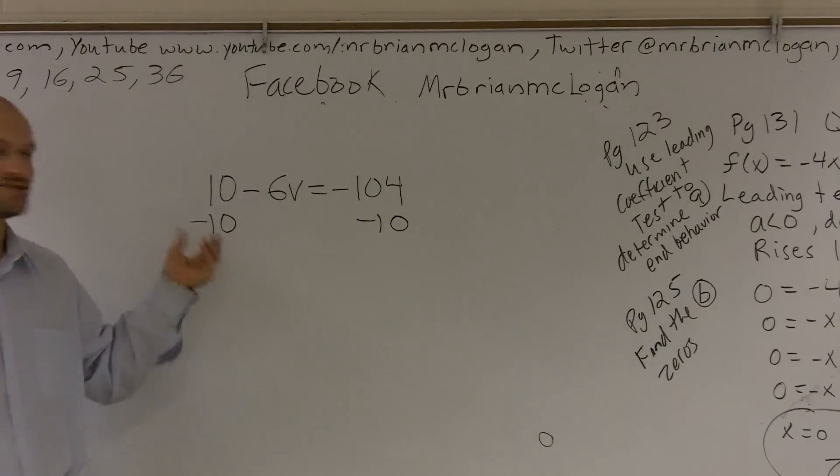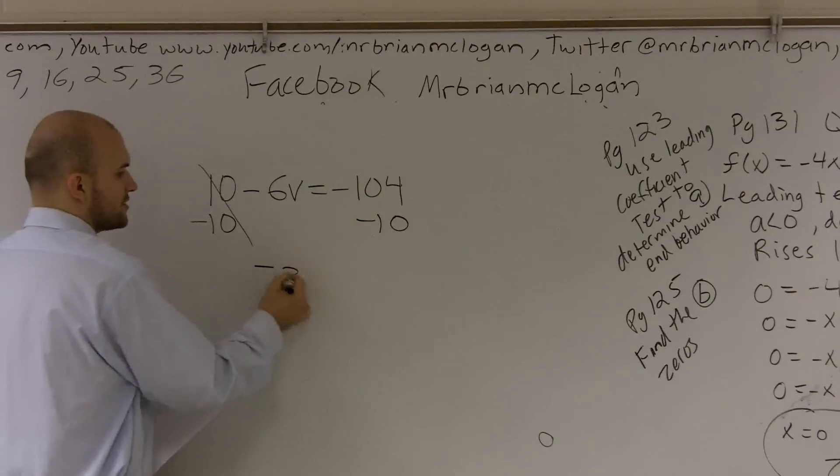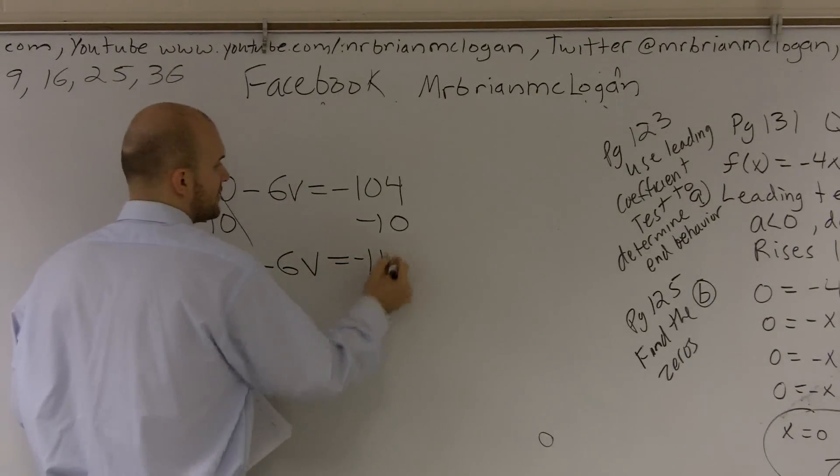Does everybody make sense of that? A lot of students will say, oh, I see subtraction. I need to add. Well, 10 plus 10 is going to give me 20. That's not going to help me get rid of my 10s. This becomes a 0, which you just cancel out. So I get negative 6v equals negative 114.